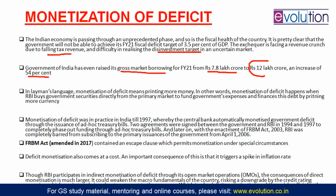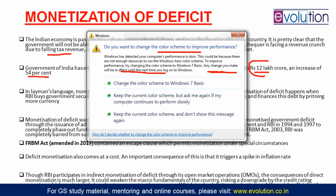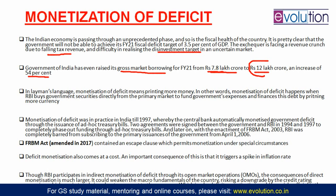In layman's language, fiscal deficit occurs when the expenditure of the government becomes more than its income. Fiscal deficit has to be financed somehow. For that financing, you can either go for market borrowing — which the government has already done, raising from 7.8 lakh crore to 12 lakh crore — or the other concept now in news: monetization of deficit, done through the RBI.